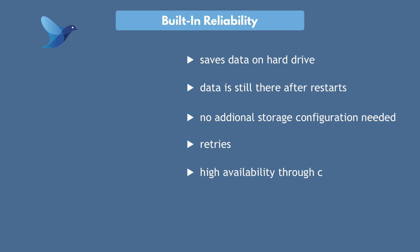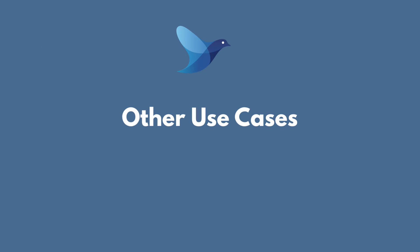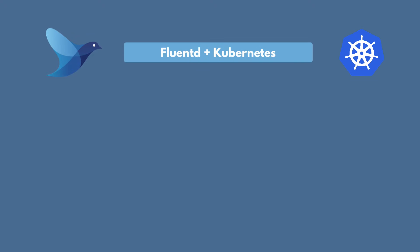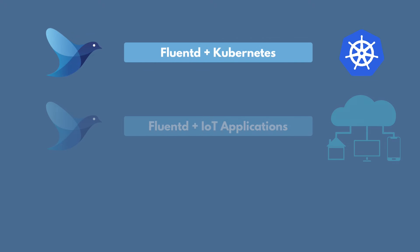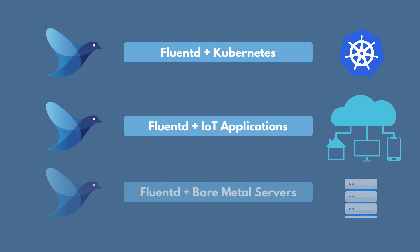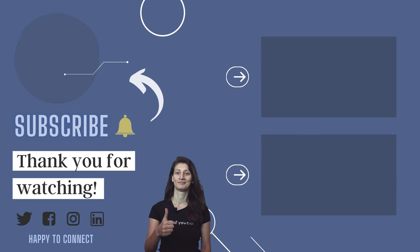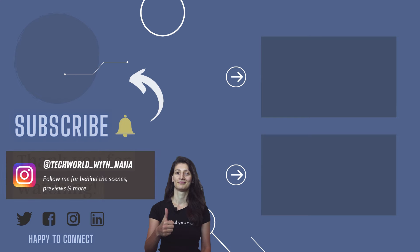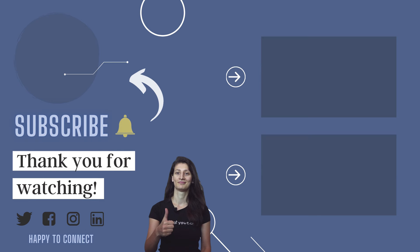In addition, you can also cluster your Fluentd setup to make it even more performant and highly available. I should mention that this is one of the use cases of Fluentd, which is logging in Kubernetes. However, logging is also a very important topic in IoT applications or in non-containerized applications running on bare metal servers, and many projects are using Fluentd for those use cases as well. So Fluentd can be used in many different environments. If you like this video, subscribe for more content like this, and if you're interested in behind-the-scenes and preview content, you can follow me on Instagram.